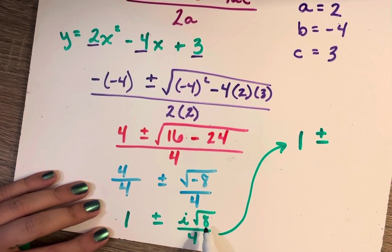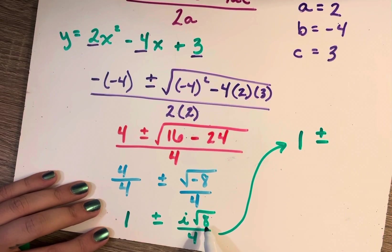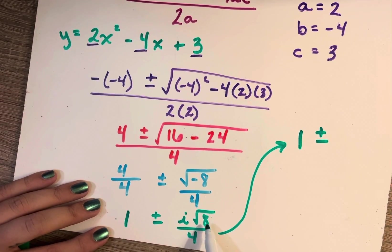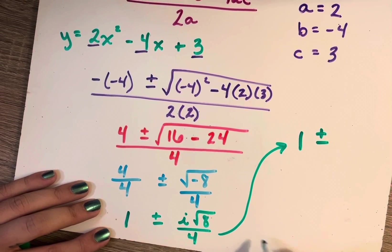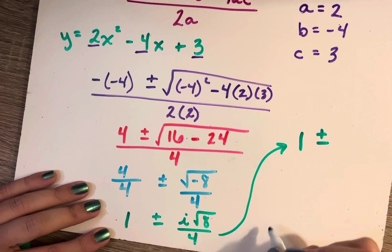Now can this be simplified further? Is there a perfect square that is a factor of 8? Yes, 4 is a factor of 8. So I can think of this radical 8 as, let me write this over here.